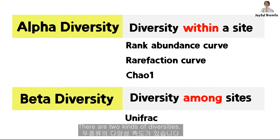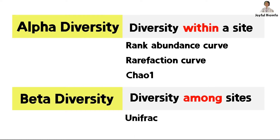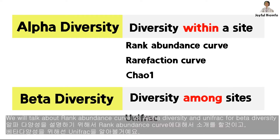There are two kinds of diversities. Alpha diversity refers to diversity within a site, while beta diversity means diversity among sites. We will talk about rank abundance curve for alpha diversity and UniFrac for beta diversity today.